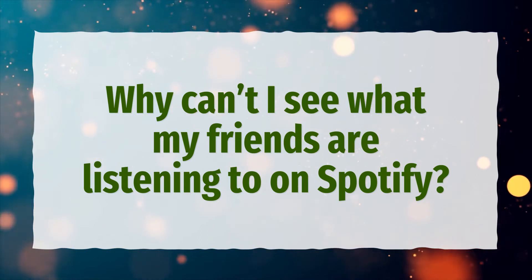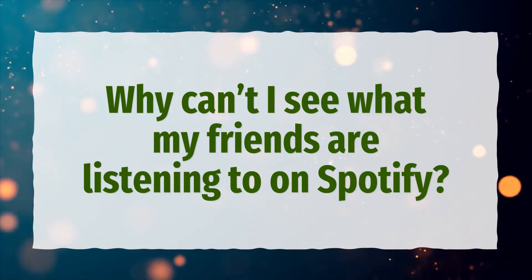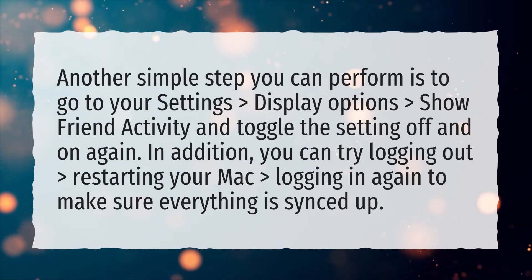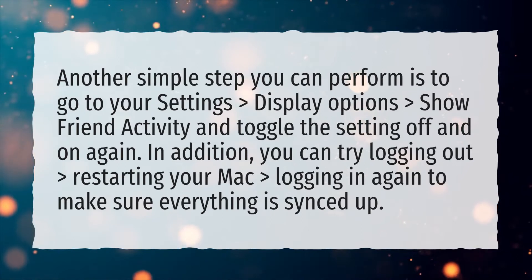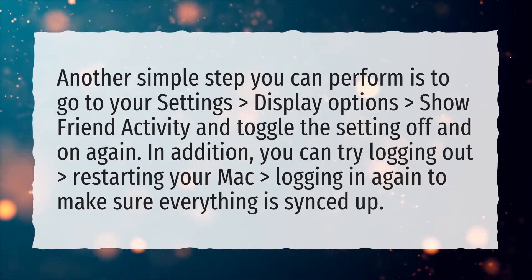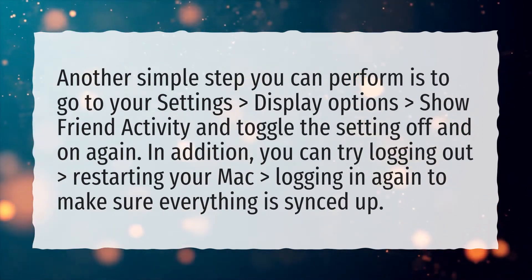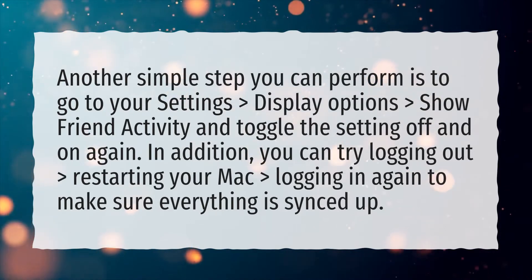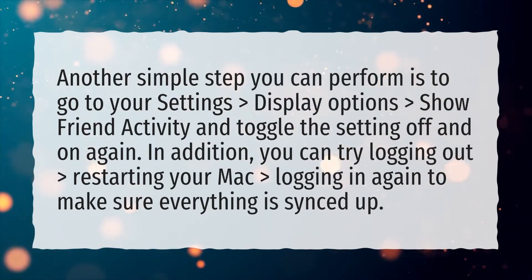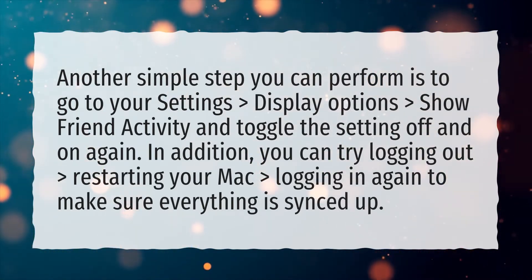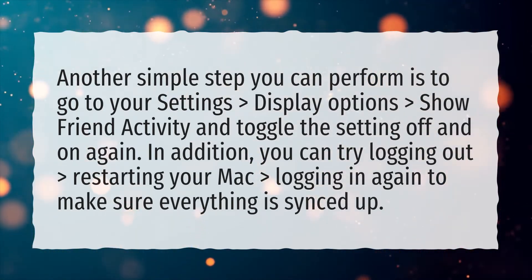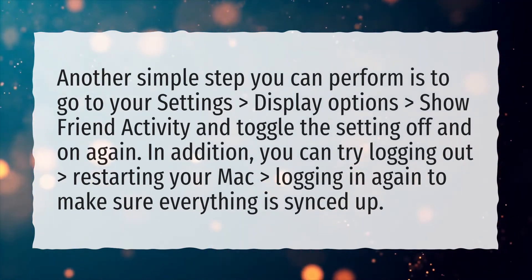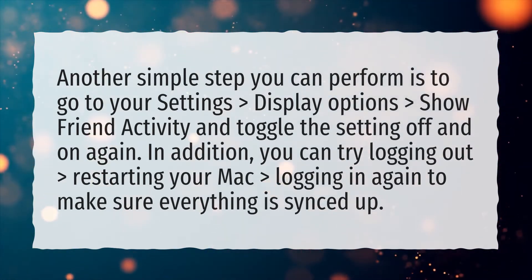Why can't I see what my friends are listening to on Spotify? One simple step you can perform is to go to your settings, display options, show friend activity, and toggle the setting off and on again. In addition, you can try logging out, restarting your Mac, and logging in again to make sure everything is synced up.